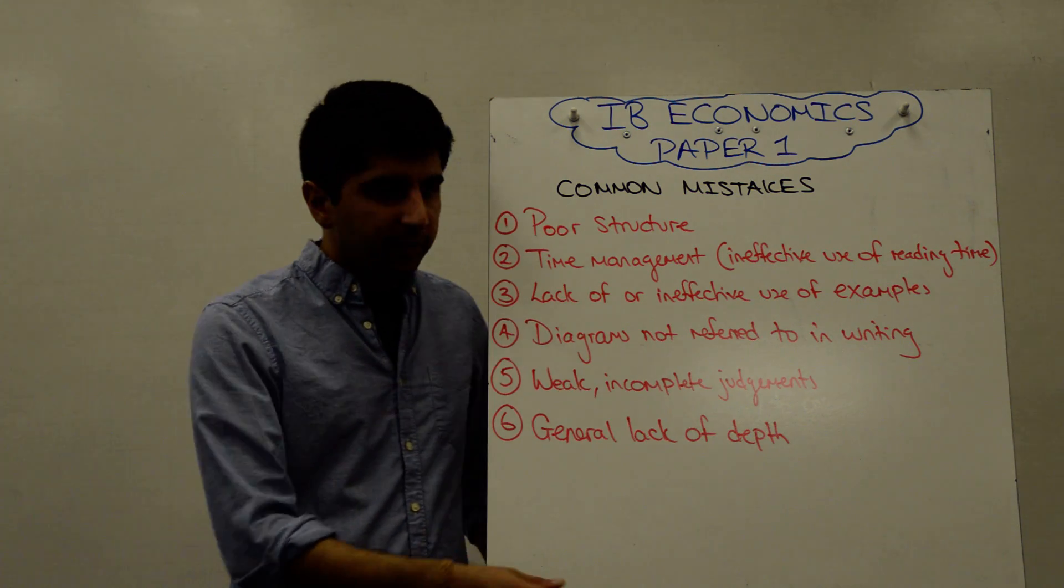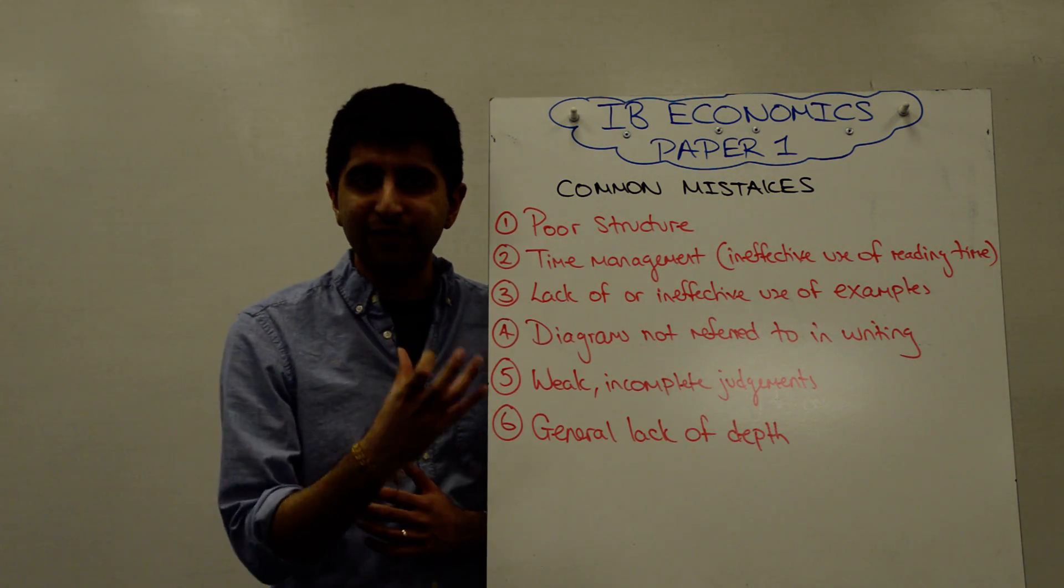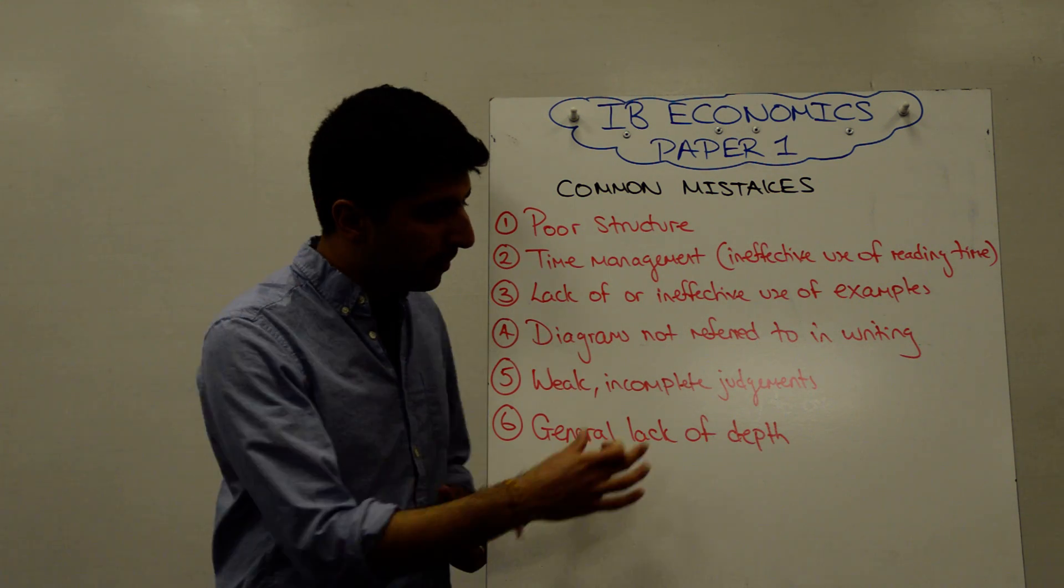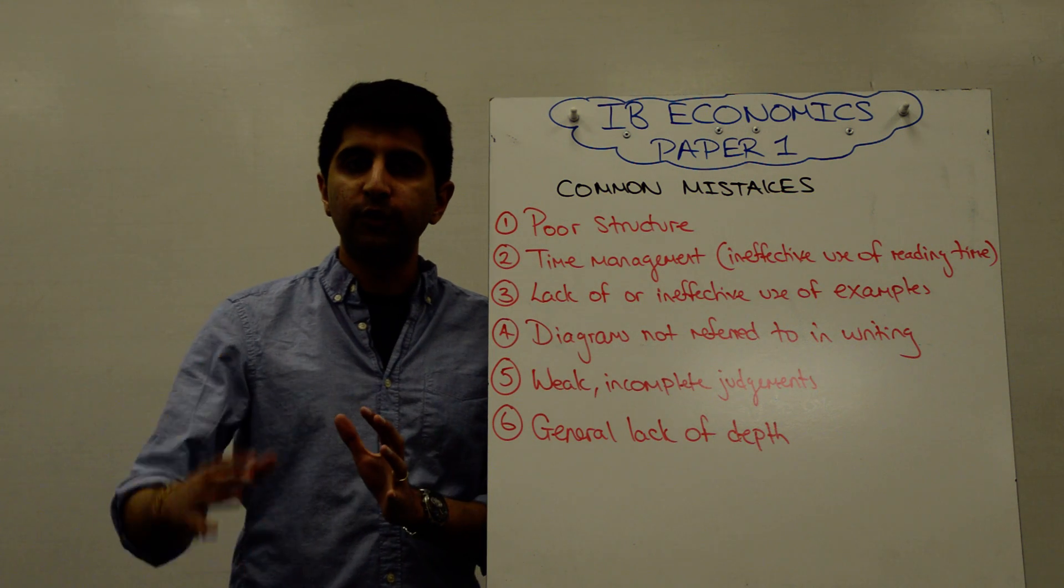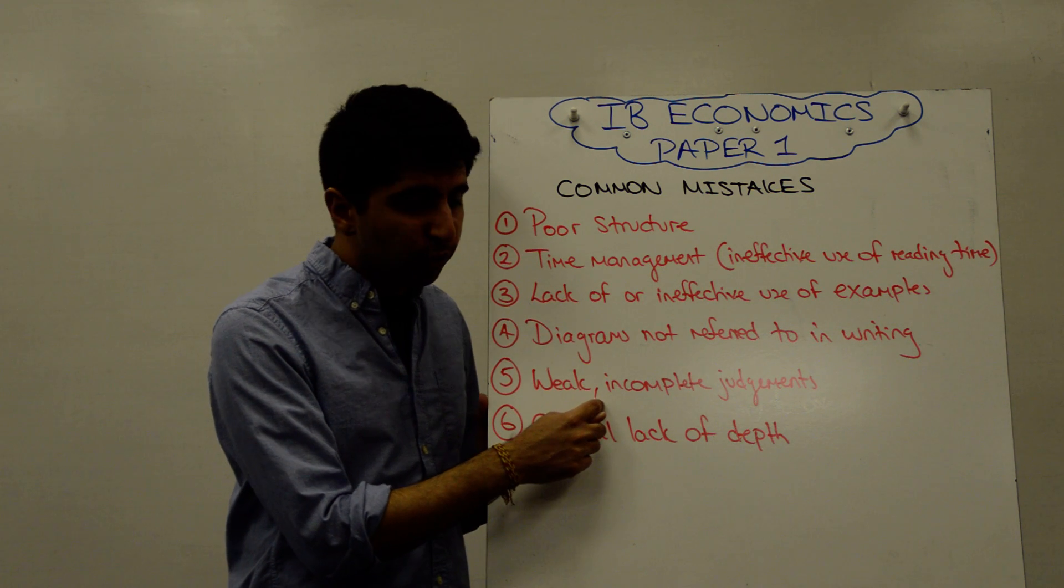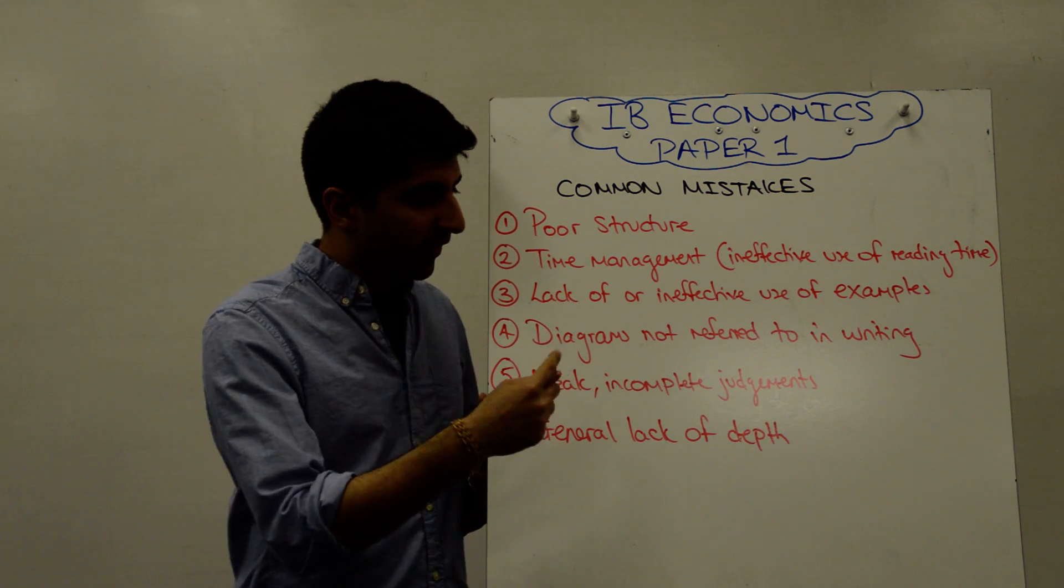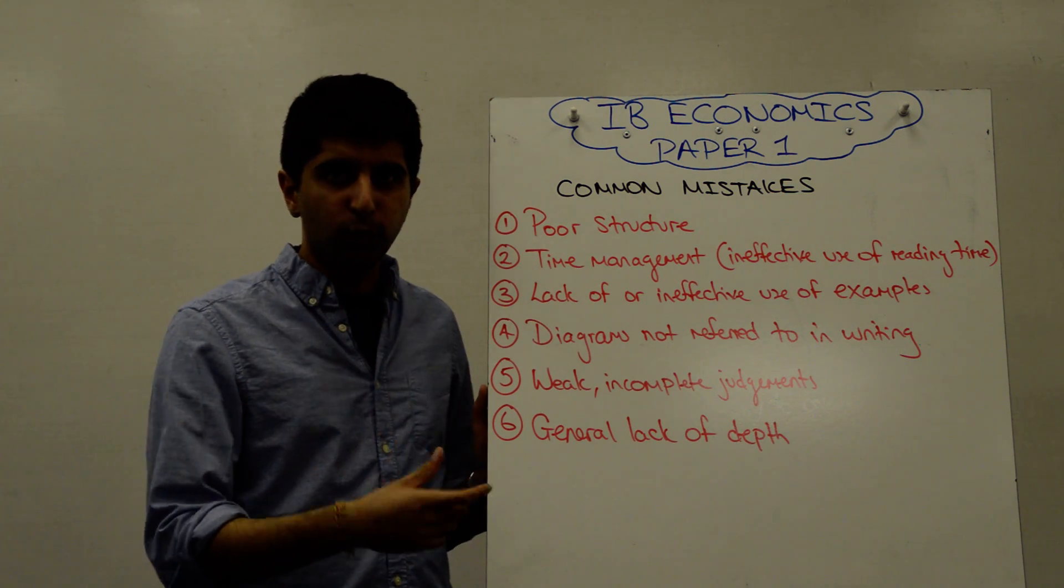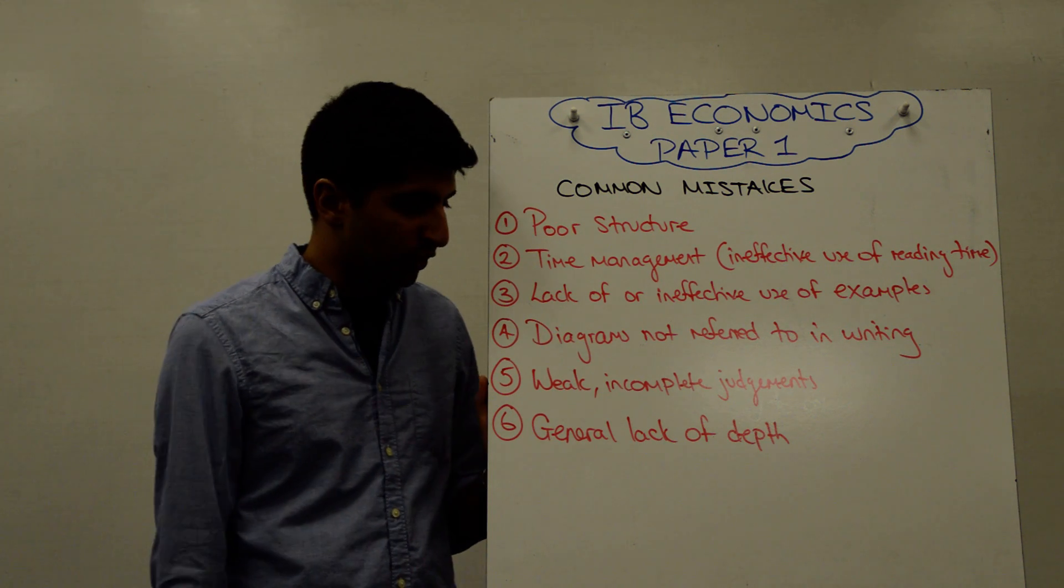Weak or incomplete judgments often come from poor time management or students not understanding the value of a really good judgment. Remember, a judgment is for 15 markers only. It's so important to hit 11 and above in your 15 marker. You've got to be careful not to be the student with a weak judgment or who runs out of time. Plan well, watch my videos, and understand how to do good judgments.